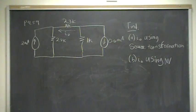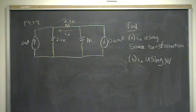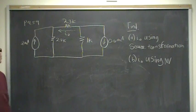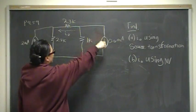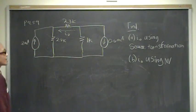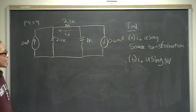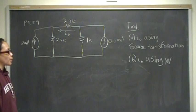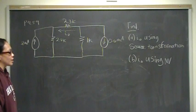Hey you guys, so I got a request for problem 59. This problem is about source transformations. We have a 2 milliamp independent current source in parallel with a 2.7 kilo ohm resistor, a 2.3, a 1k, and 0.6 milliamps. We want to find this current here using source transformations for part A, and then for part B we want to use the node voltage method to confirm that that is the correct answer.